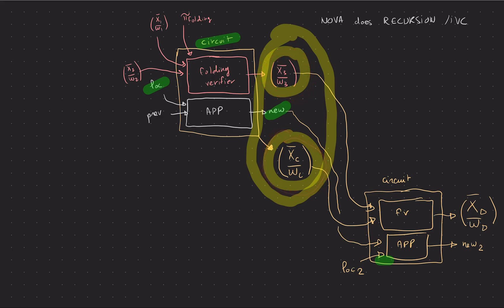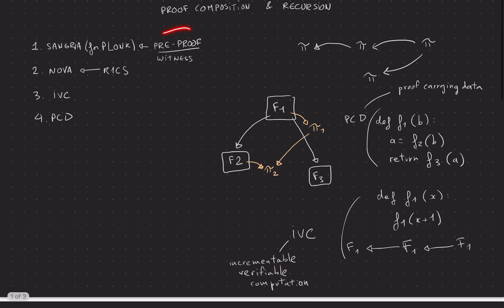So yeah, hopefully that's sort of clear. I know these are complicated things to think about but if you think more about it, if you read the paper, you can try to understand these concepts. I'm going to stop here for all the pre-proof recursion. I believe there's a paper called Supernova that talks about generalizing this thing. I'm not sure how it works, I haven't read it, but that might be of interest. But now I'm going to spend more time on the normal proof composition and recursion part and talk about IVC PCD. So I'll see you at the next video, and yeah we'll talk about that.